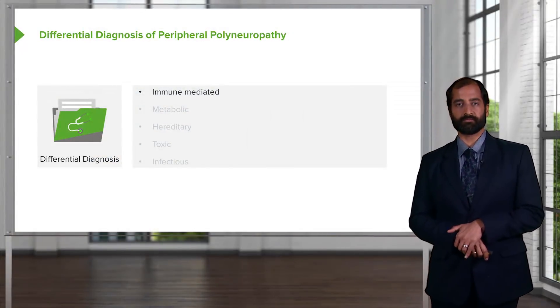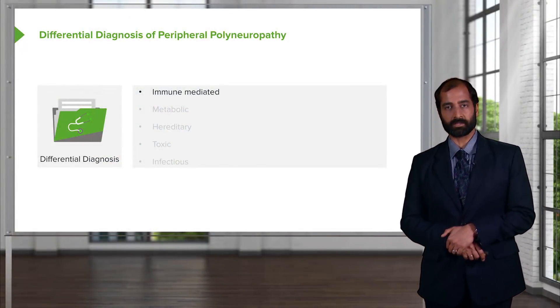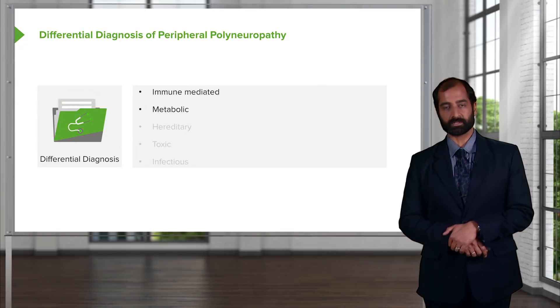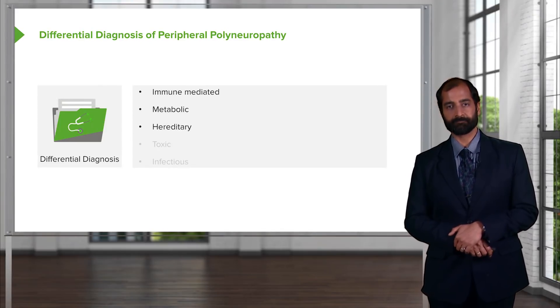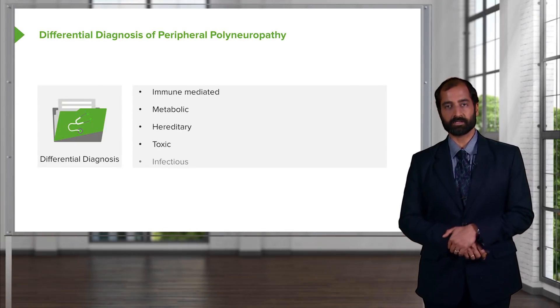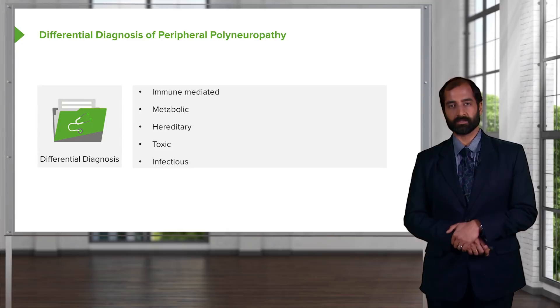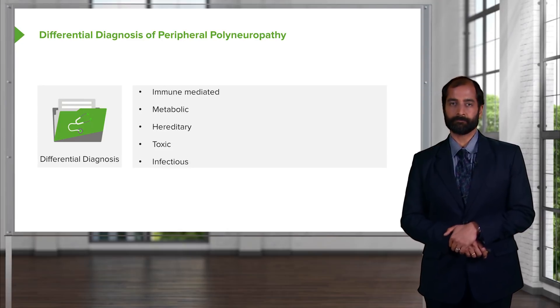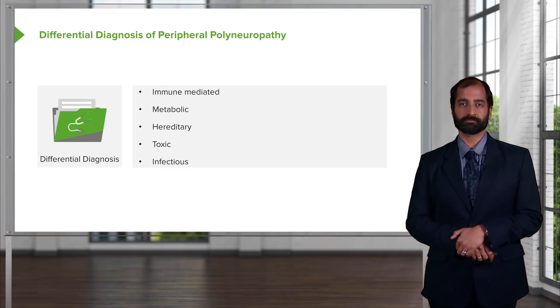The differential diagnosis of peripheral polyneuropathy includes the following: immune-mediated, metabolic issues, hereditary, toxic, and infectious. We'll be spending a lot of time with many of these differentials.